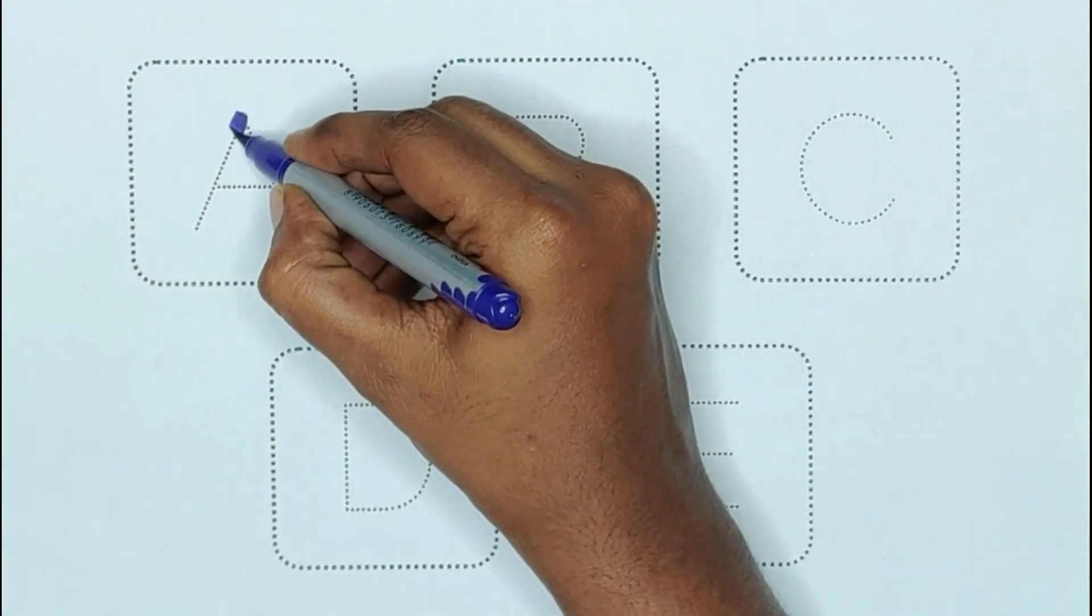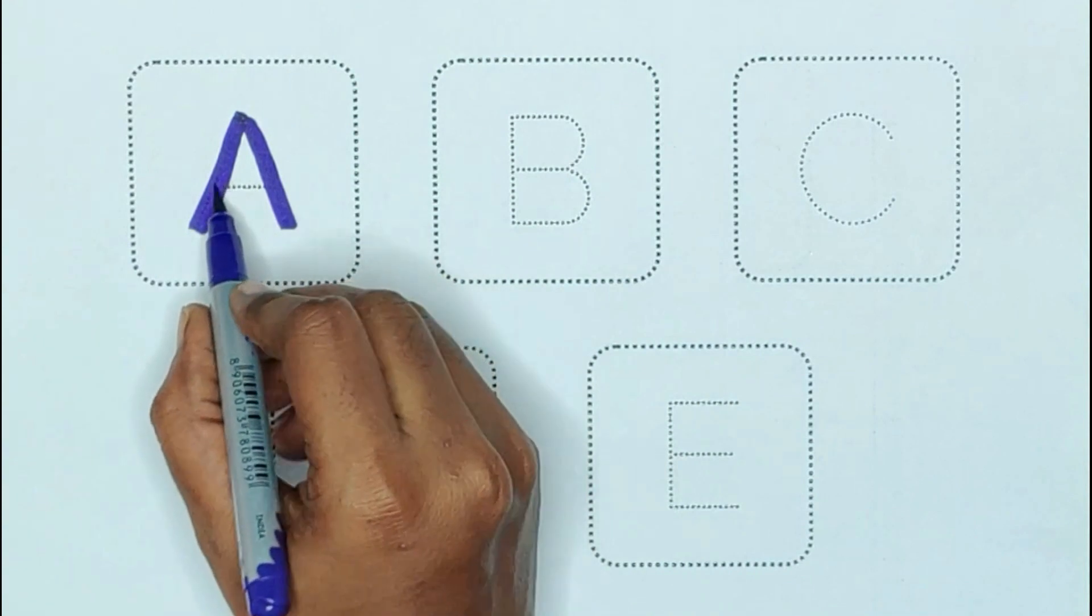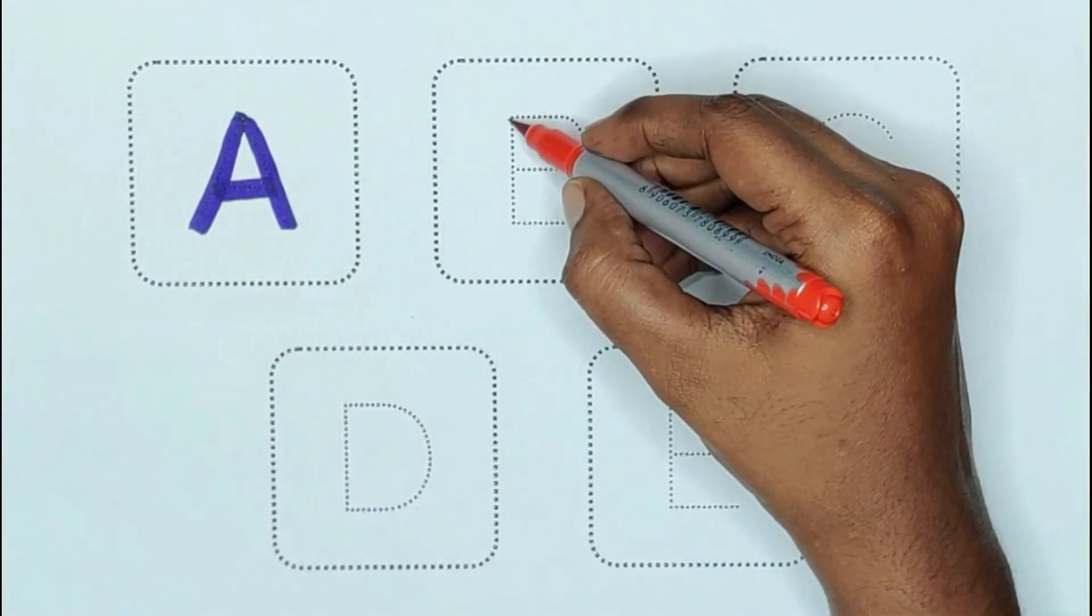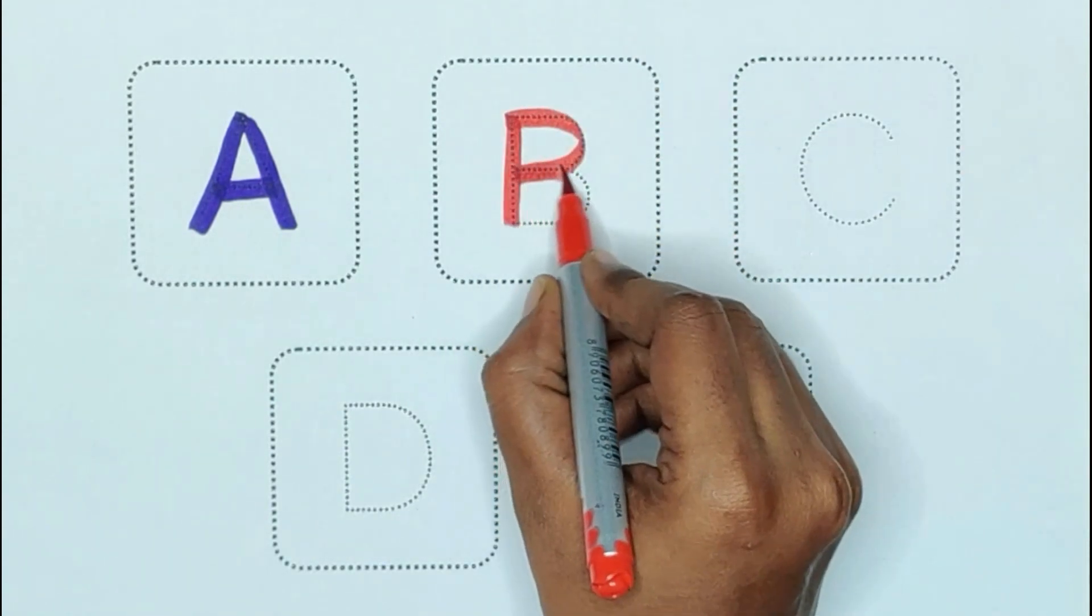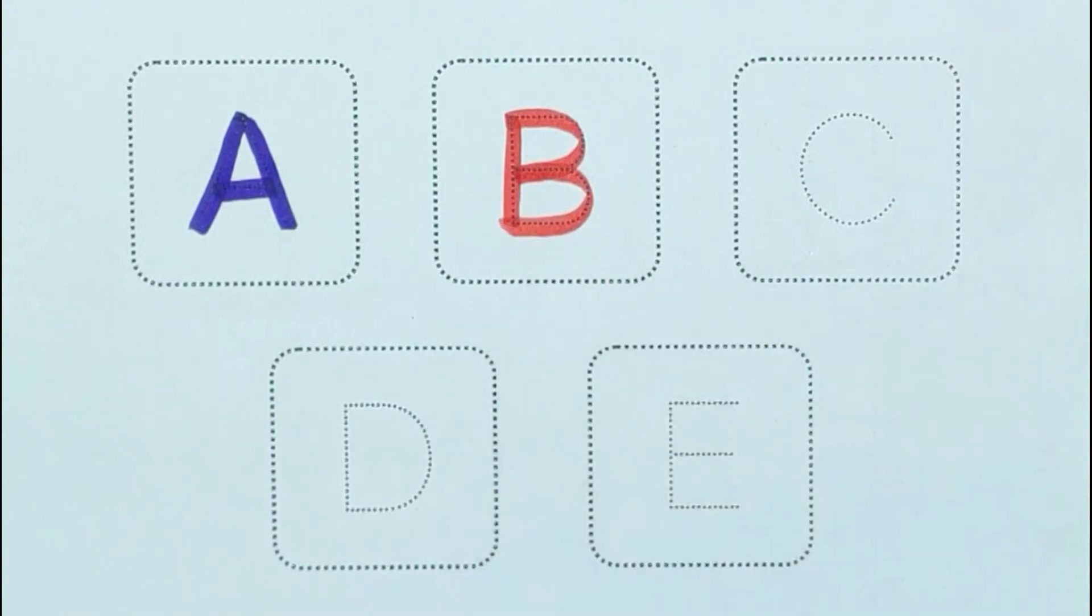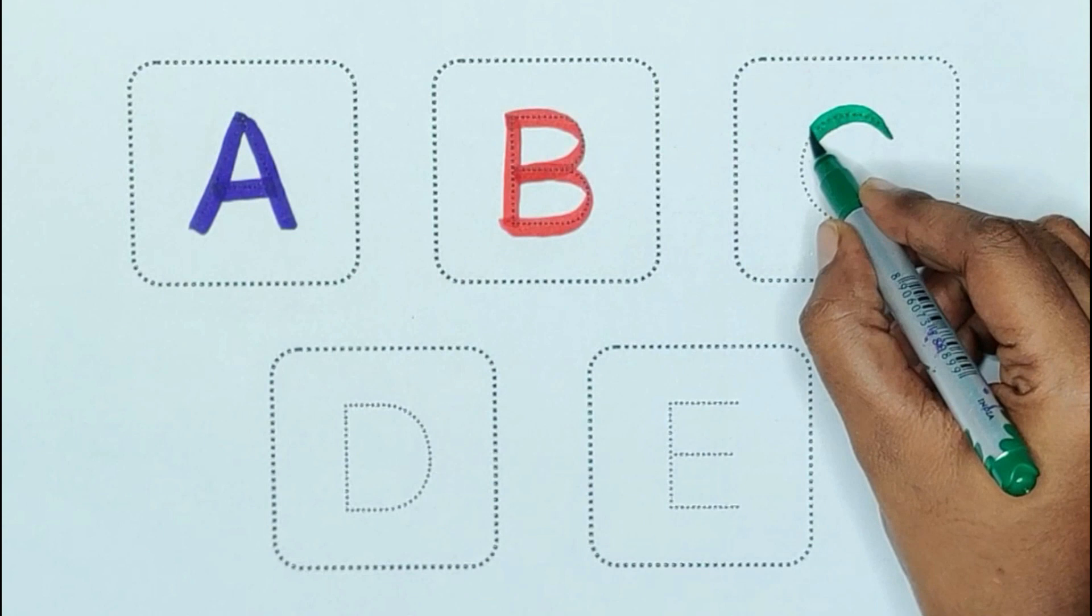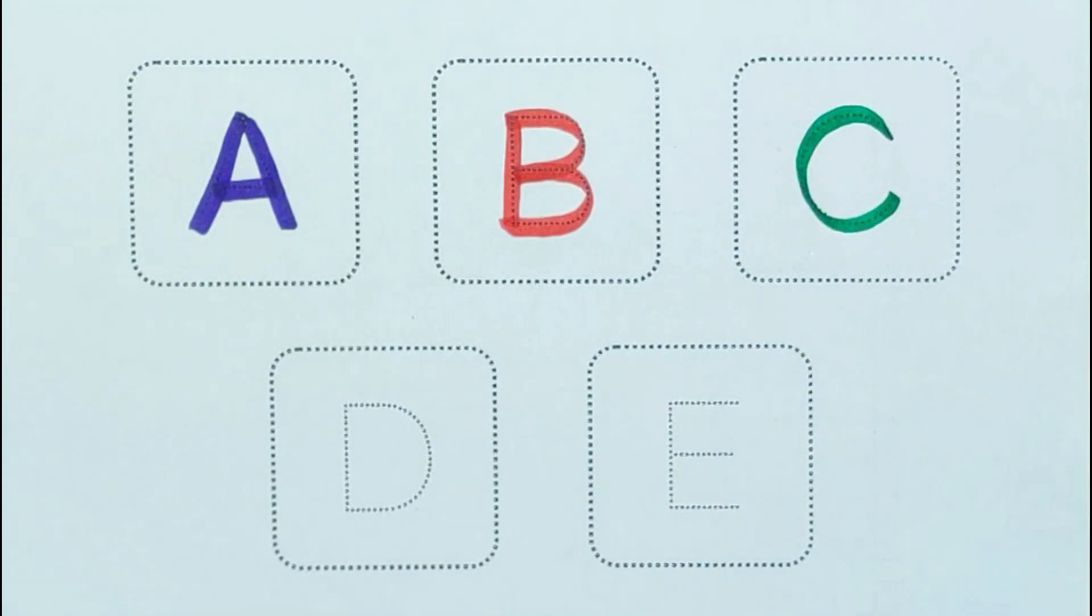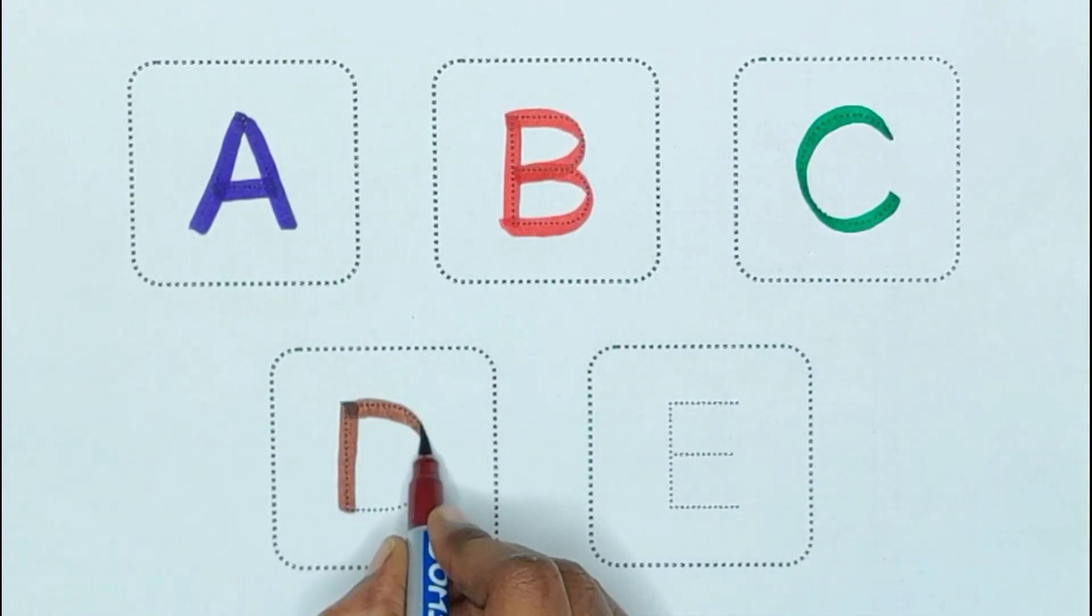Violet color, A, A for ant. Red color, B, B for bat. Green color, C, C for car. Brown color, D, D for drums.